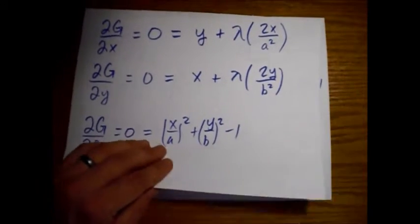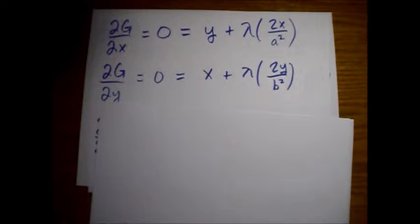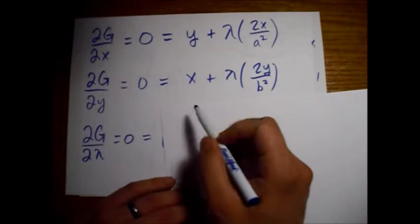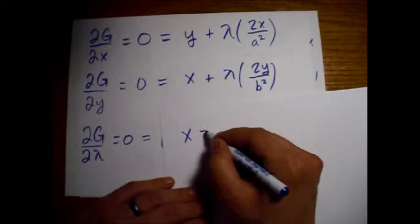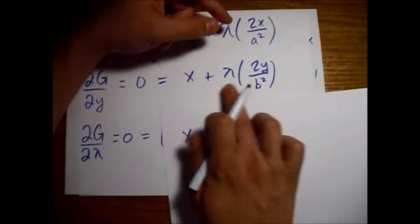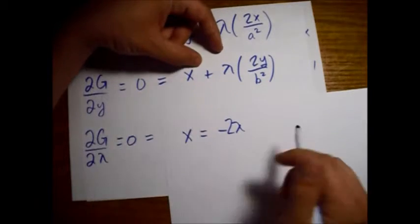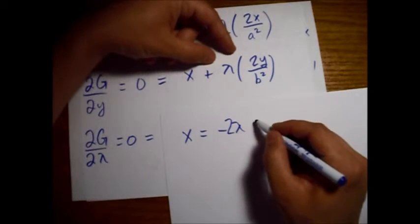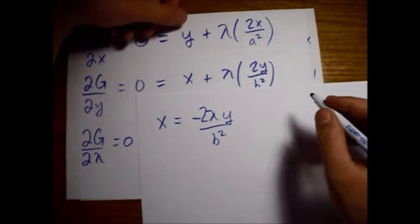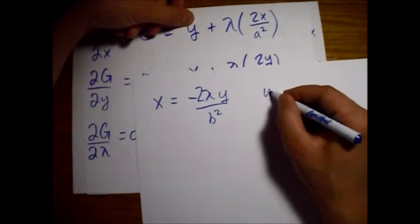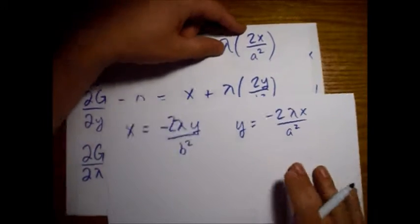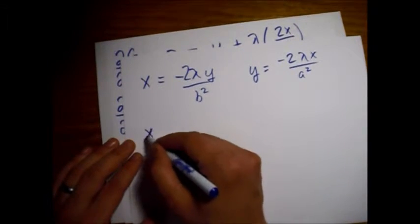Let's see if we can work these out. From the first equation, setting it equal to zero and rearranging: x = −2λy/b². Looking at the second equation: y = −2λx/a². Let's plug one of these into the other and see what happens.